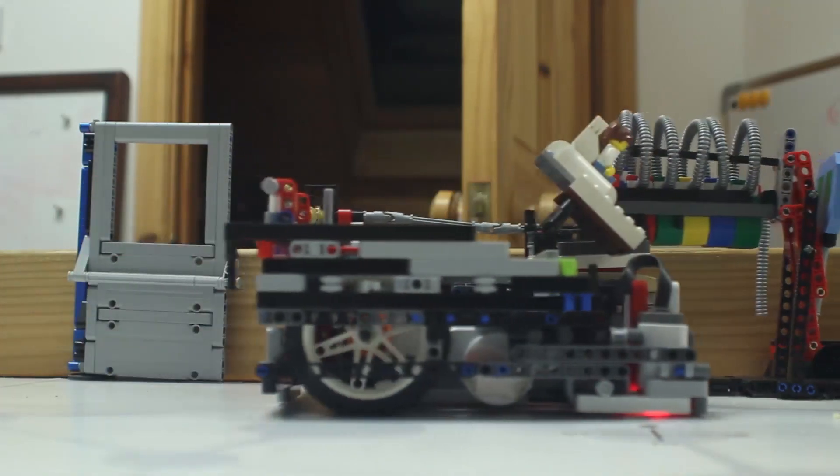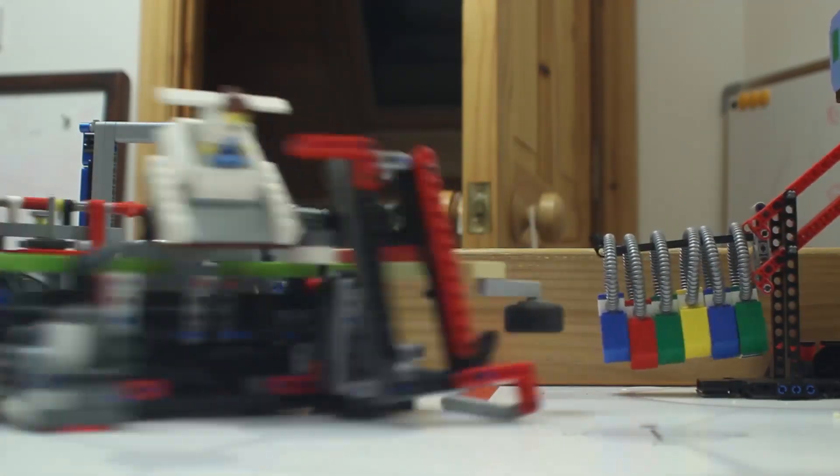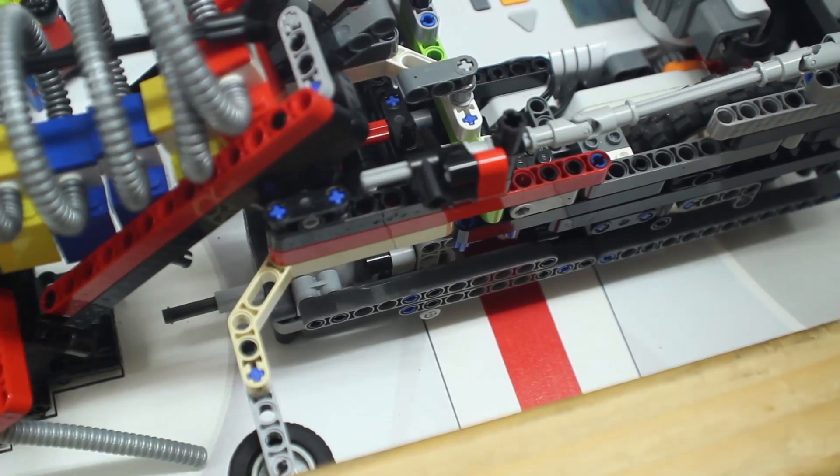The robot then drives up to the project-based learning mission and drops the six loops. This is done with the pull of a pin.